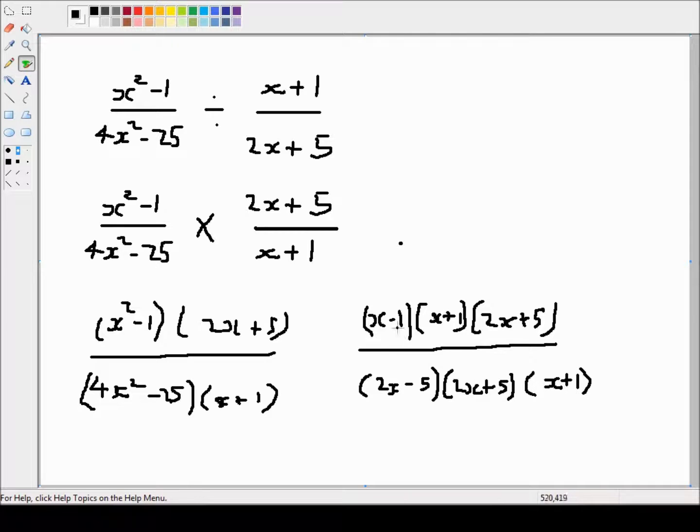Okay, so now we've got everything broken down into prime factors. Is there anything that we can cancel? Well, we've got a 2x plus 5 here and a 2x plus 5 here. And we've got an x plus 1 here, and we've got an x plus 1 here. So this whole thing actually simplifies to just x minus 1 over 2x minus 5.